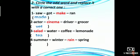Number 4. Summer, winter, rain, spring. The odd one is rain because it's a verb, but summer, winter, spring are the seasons of the year, and the replaced one will be fall.